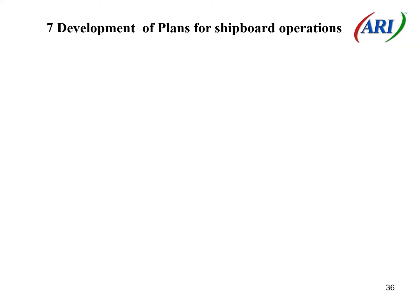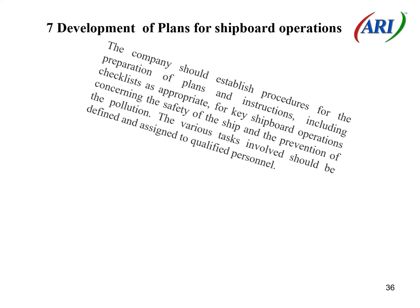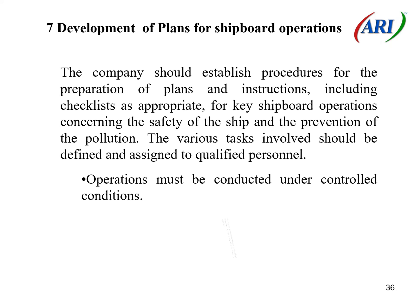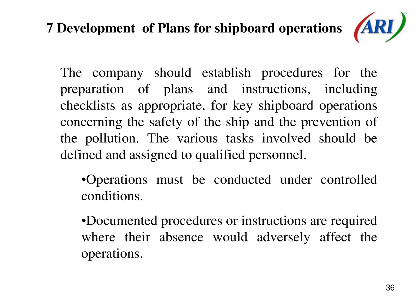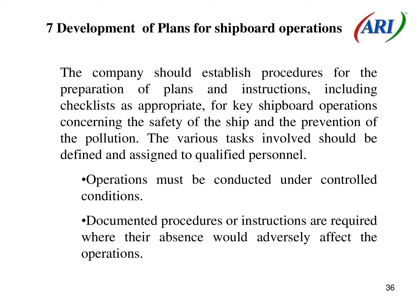Section 7: Development of Plans for Shipboard Operations. The company should establish procedures for the preparation of plans and instructions, including checklists as appropriate, for key shipboard operations concerning the safety of the ship and the prevention of pollution. The various tasks involved should be defined and assigned to qualified personnel. Operations must be conducted under controlled conditions. Documented procedures or instructions are required where their absence would adversely affect the operations.